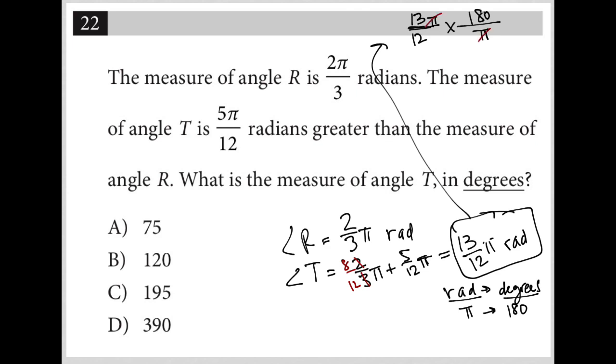I go to my calculator. Actually, I'm going to do some cross-canceling. 12 goes into 12 once. 12 goes into 180 fifteen times. So all that's left for me to do is multiply 13 times 15. I throw that in my calculator, and what I get is that this equals 195 degrees. So my answer here is choice C.